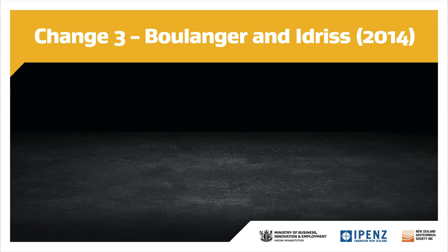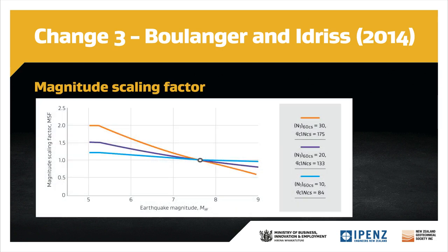The updated magnitude scaling factor considers not only the effect of increasing duration with earthquake magnitude, but also accounts for differences in the soil response depending on soil density, represented by penetration resistance. It implies that MSF varies significantly in dense sands, while the variation of MSF with MW is much smaller for loose sands.